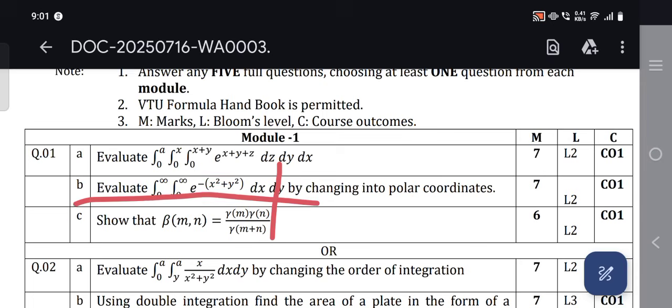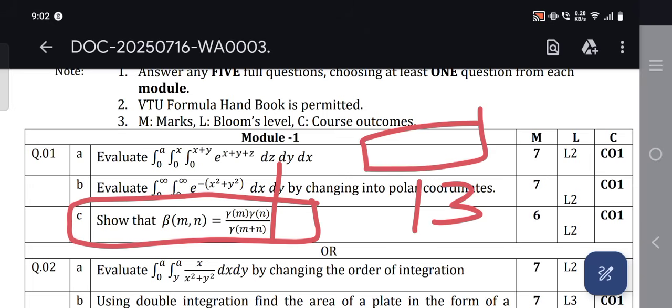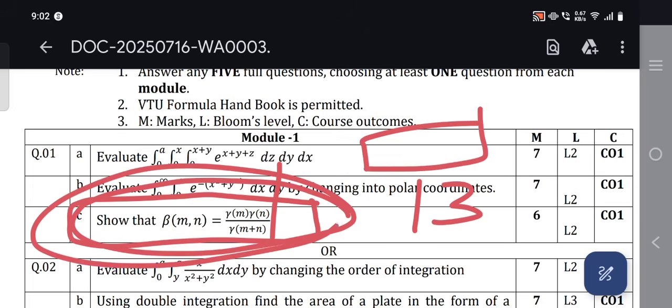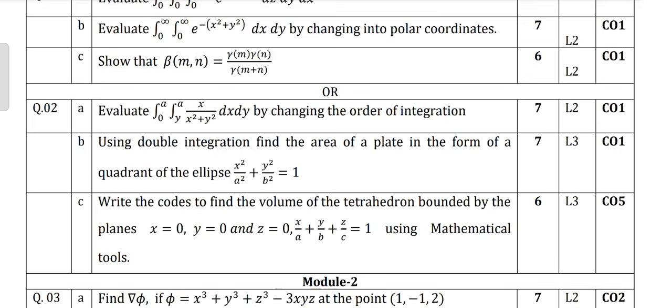One more question where you can expect marks is the proof part. They'll definitely ask 'show that' - study both the model paper question proofs. If you learn this much in this module, you can score 13 marks with least effort. For the integration you memorize the final answer, and for the proof you have to learn the proof part.